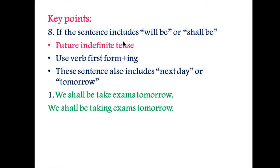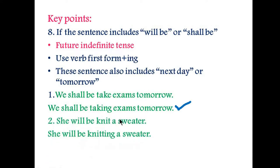Point number eight: if the sentence includes 'will be' or 'shall be', then this sentence is future continuous tense and you will use the verb first form plus '-ing'. These sentences also basically include words like 'next day' or 'tomorrow'. For example, 'We shall we take exams tomorrow' is incorrect. 'We shall be taking exam tomorrow' is the correct option.